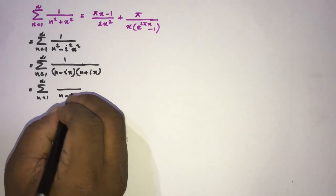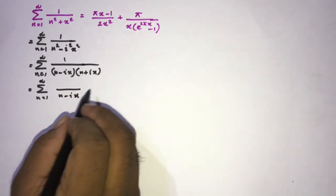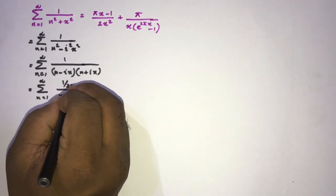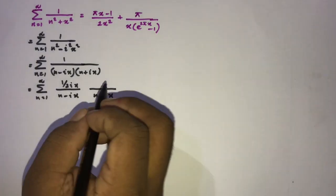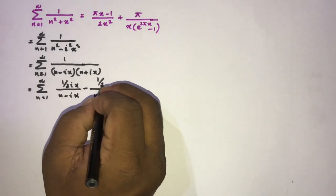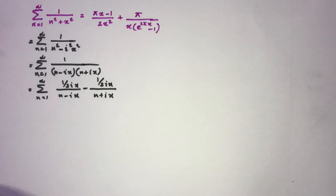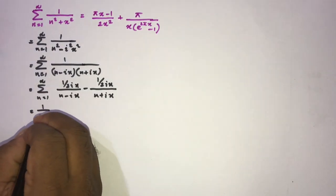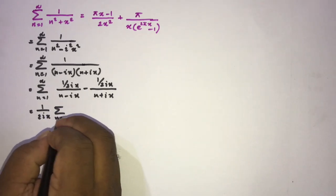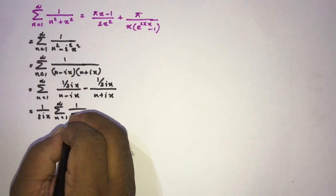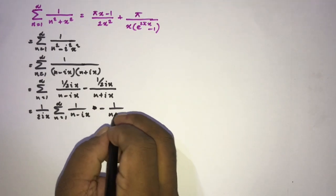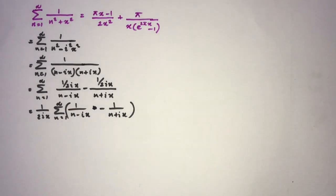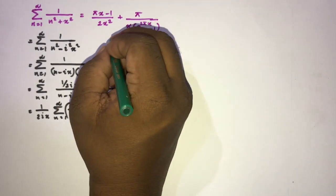For the partial fractions: plugging in n = ix gives 1/(2ix) for the first term, and plugging in n = −ix gives −1/(2ix) for the second. So we can take 1/(2ix) as a common factor, giving (1/(2ix)) · ∑(1/(n − ix) − 1/(n + ix)).